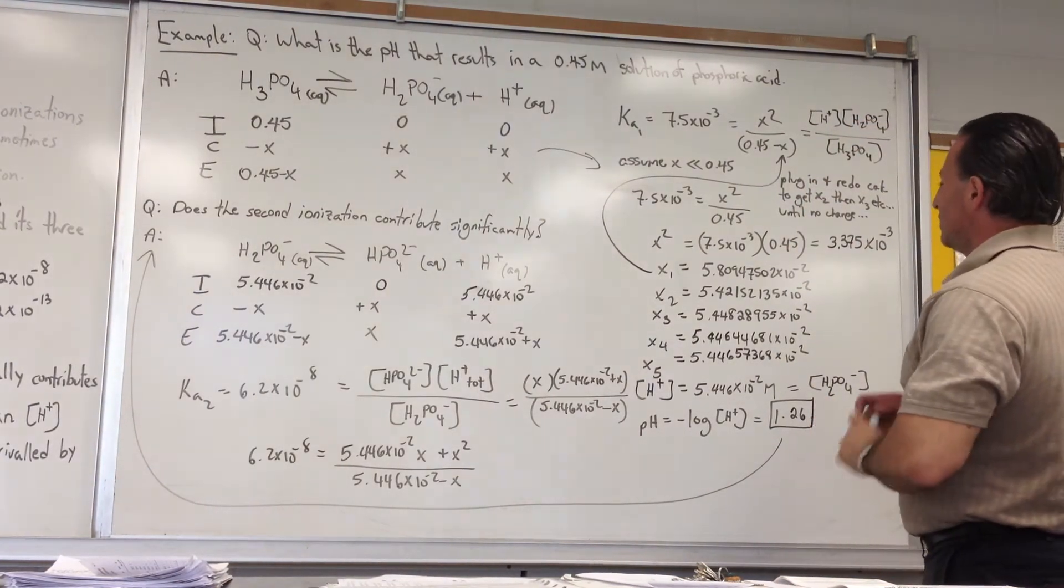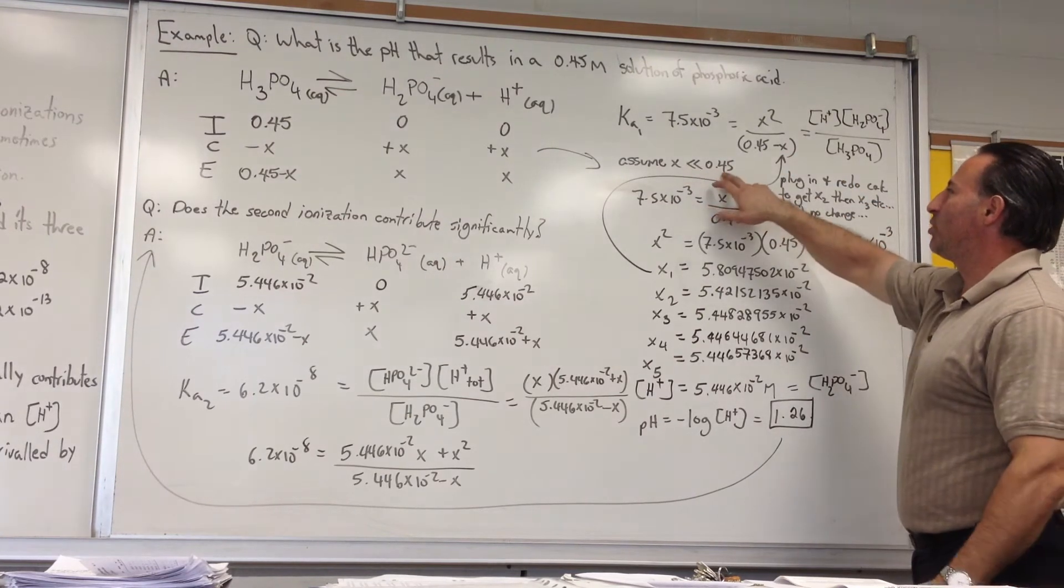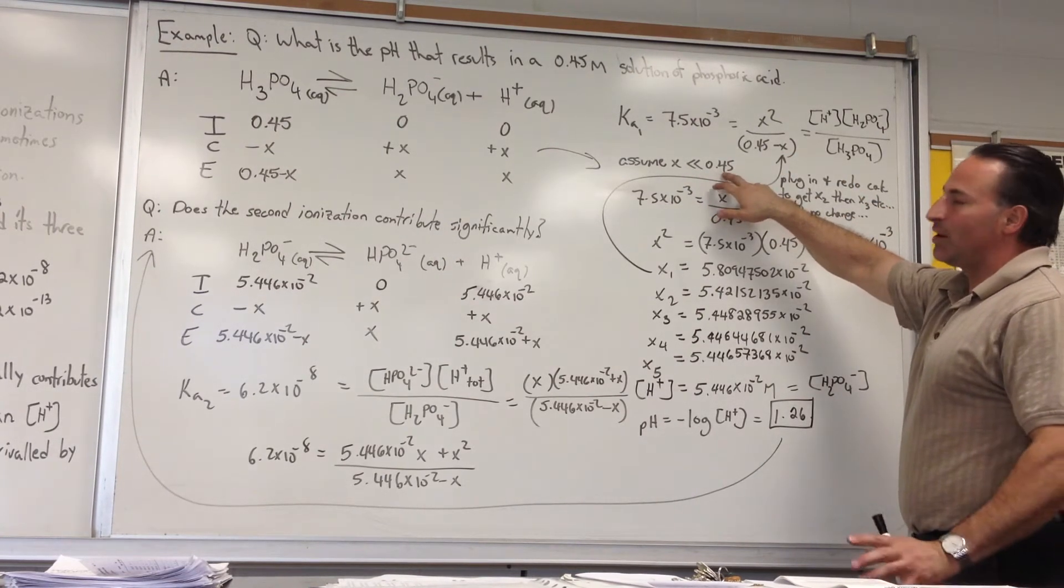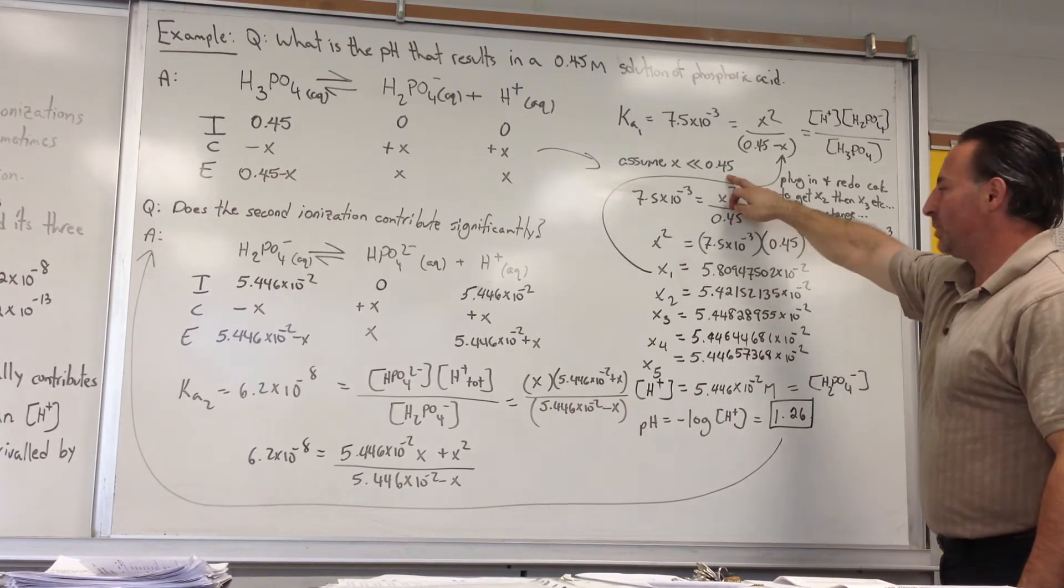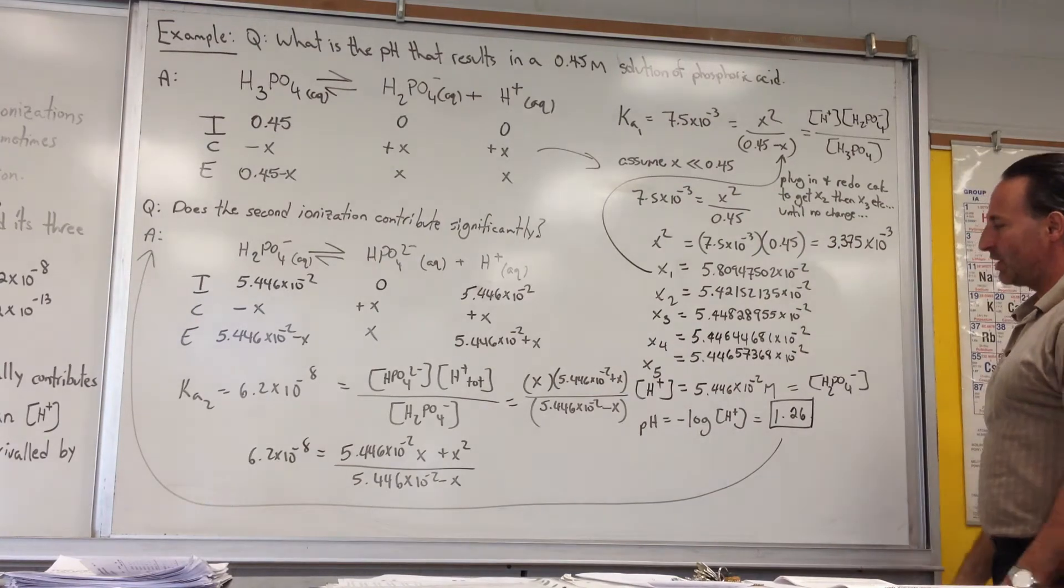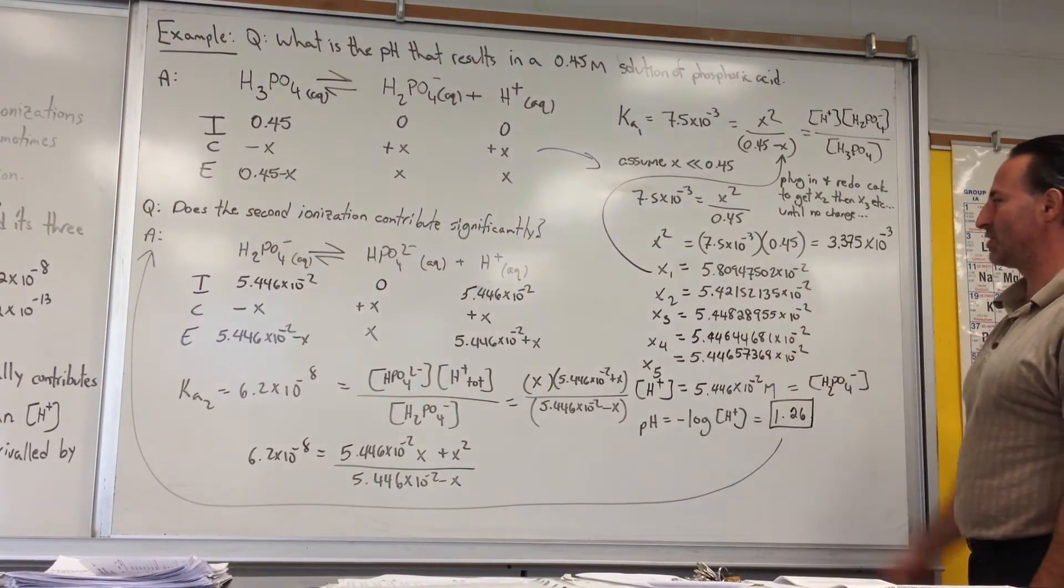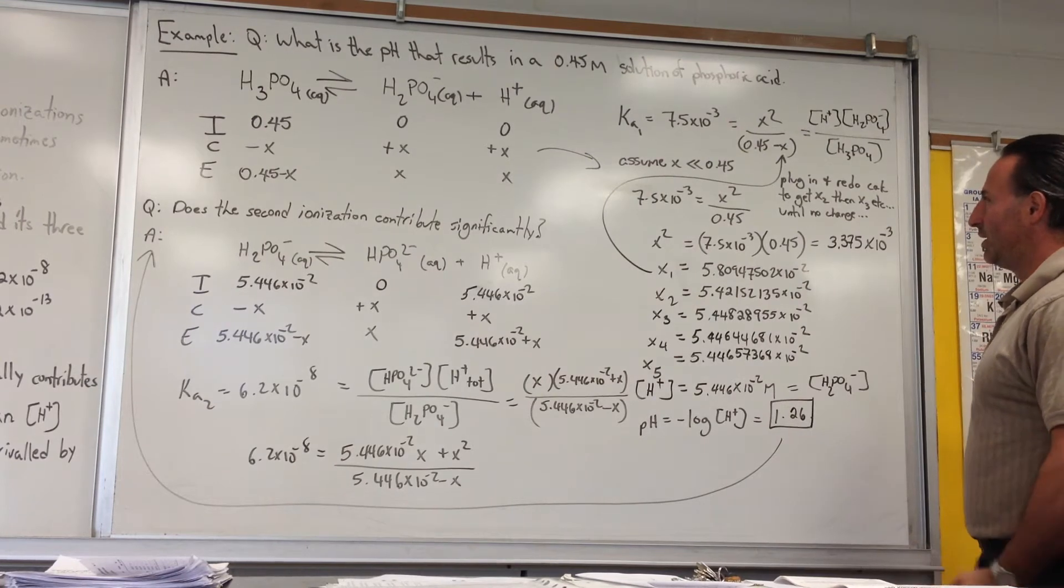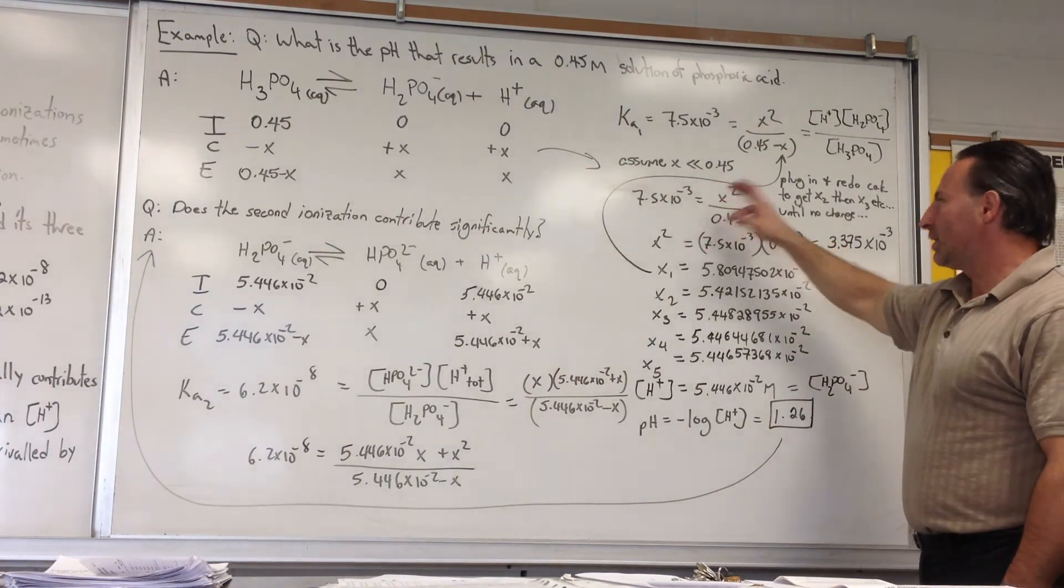So the first assumption I made was to assume that X is going to be a lot less than 0.45. I did it on purpose even though it's not really true. But by using the iterated method of calculation you still converge on the correct answer. If you just do enough iterations you eventually get the correct answer anyway. So this is not really true strictly speaking, but let's go through it anyway.